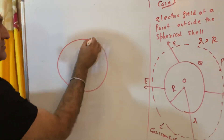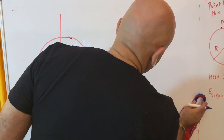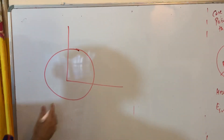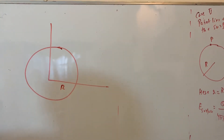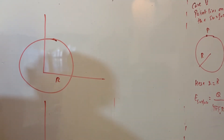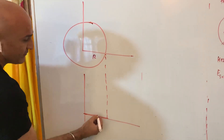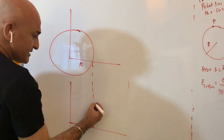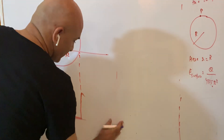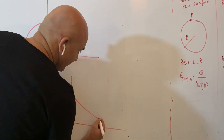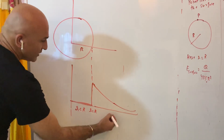Now, the graph is very important — they will ask you to draw it. Remember: as you go inside the shell, the electric field is zero all the way up to the surface. At the surface, you suddenly get a maximum electric field. Beyond the surface, the field follows an inverse square law — it decreases going outward.